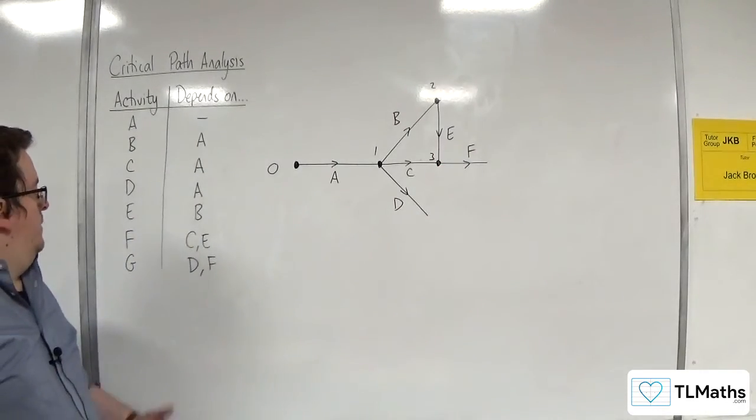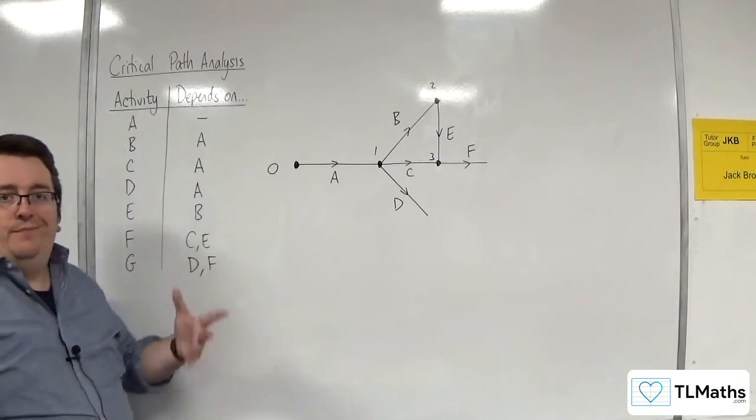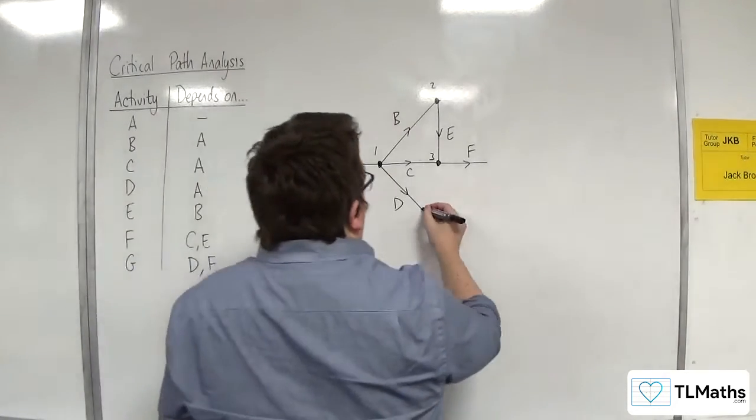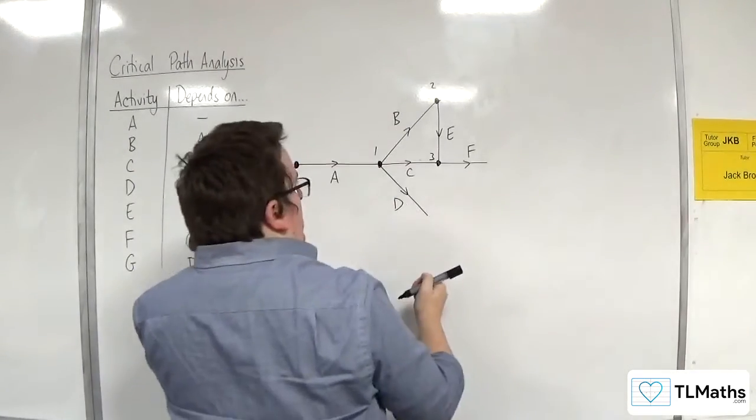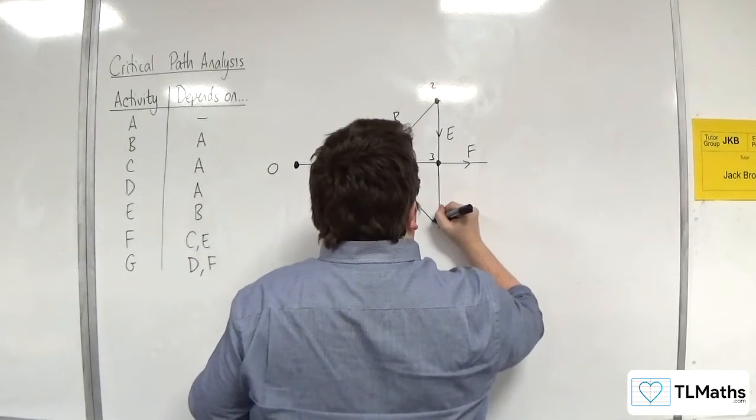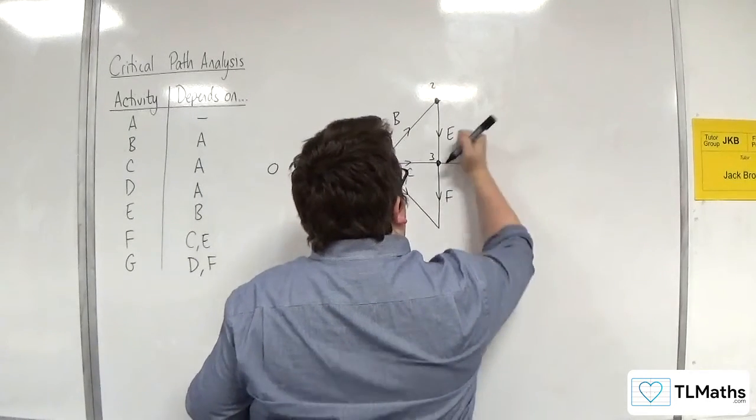Then we've got G relies on both D and F. Again, I don't want to have to loop that round, so I'm going to redraw F so that it's coming downwards like that.